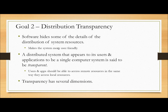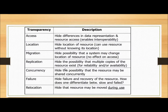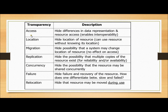Transparency: the software masks some of the distribution details for a user-friendly system. The files which can be observed by the user at the application level — the software is called transparent. There are several types of transparency: access transparency, location transparency, migration transparency, replication transparency, concurrency transparency, failure transparency, and relocation transparency.